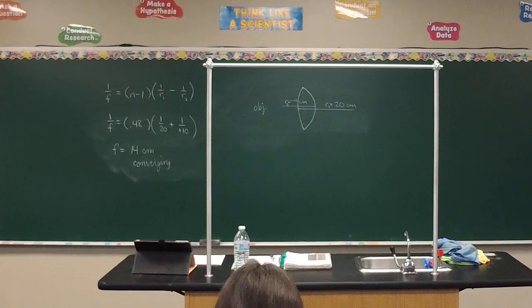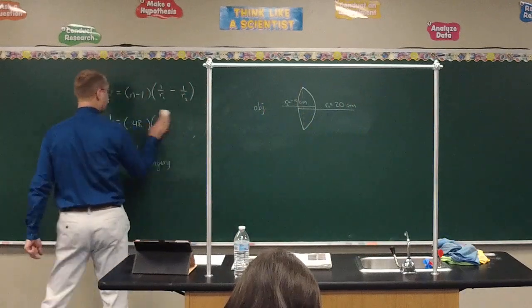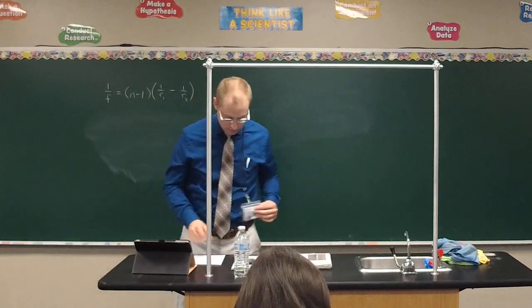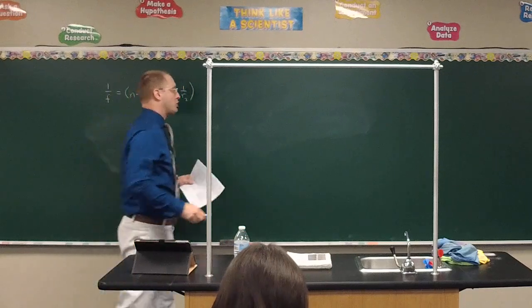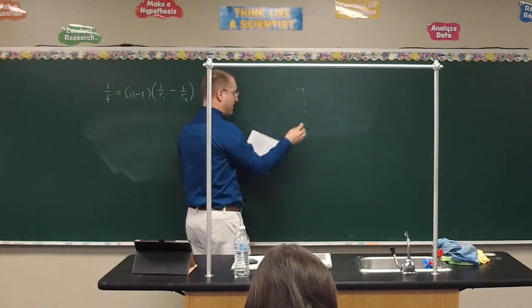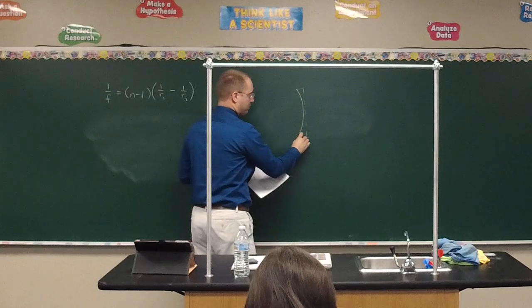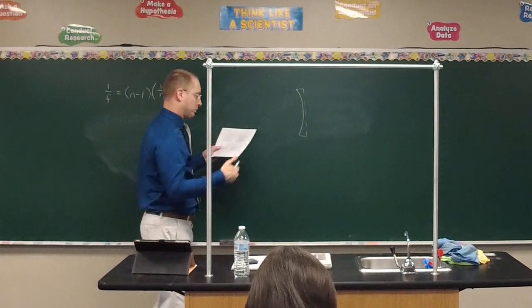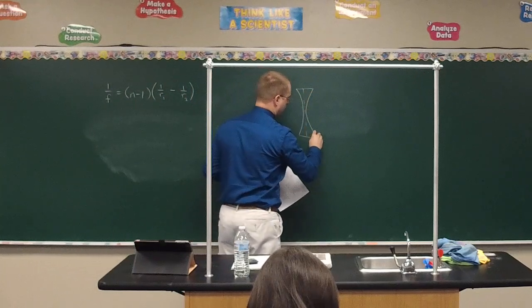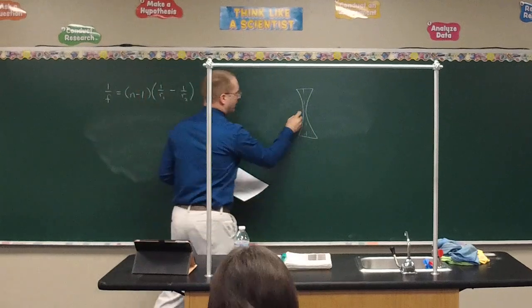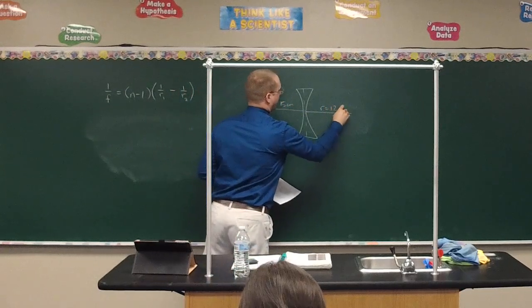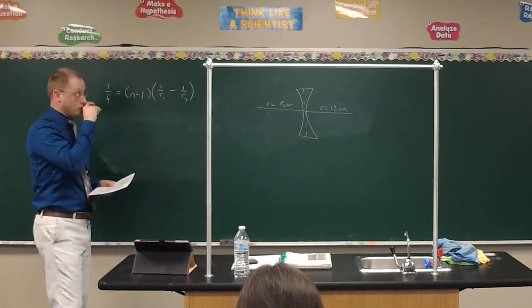Let's look at Problem 4. A double concave lens has sides with radii of curvature of 15 centimeters and 12 centimeters. Since it's double concave, both sides cave in. The 15-centimeter side is less curved, so come out a little from the optical plane and make a moderate curve. The 12-centimeter side is more pronounced — come out further and make this side more curved.